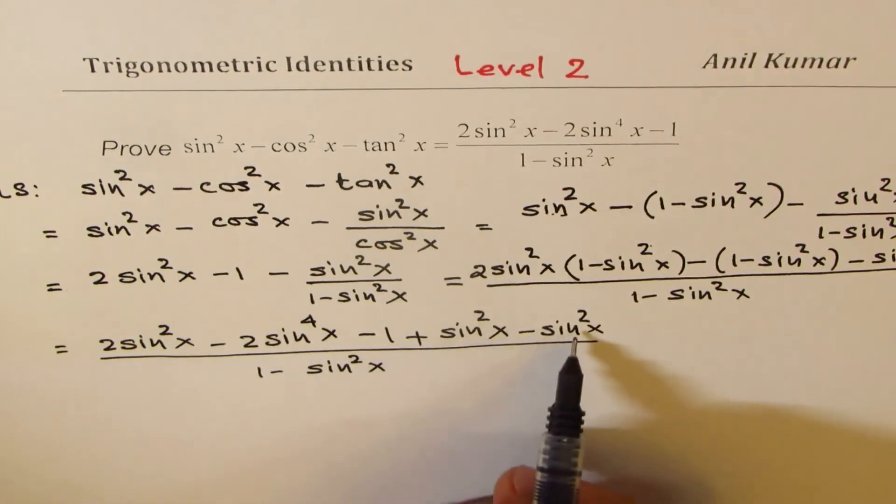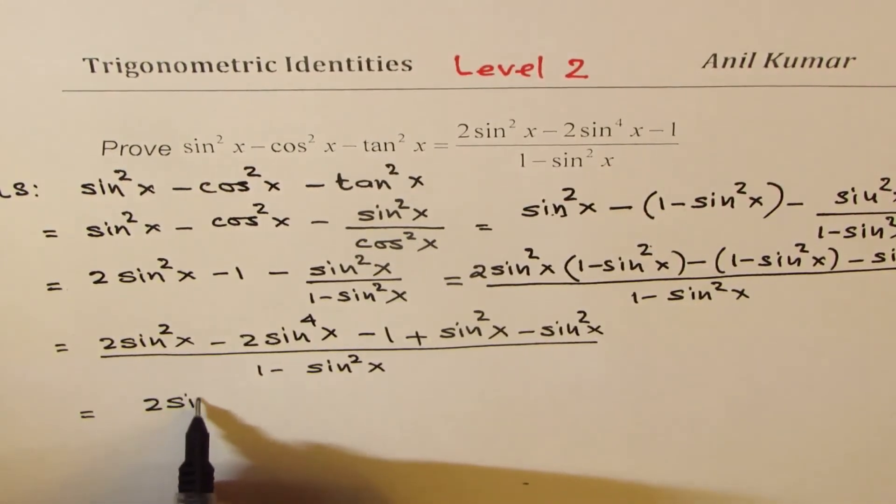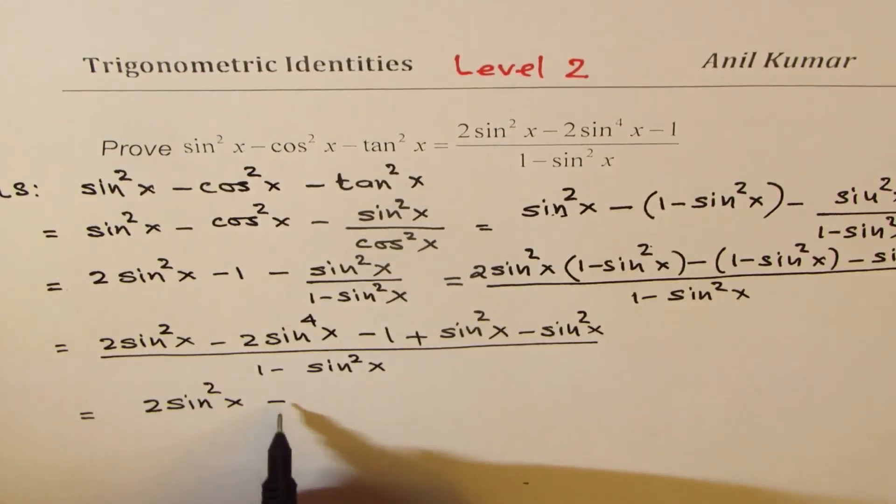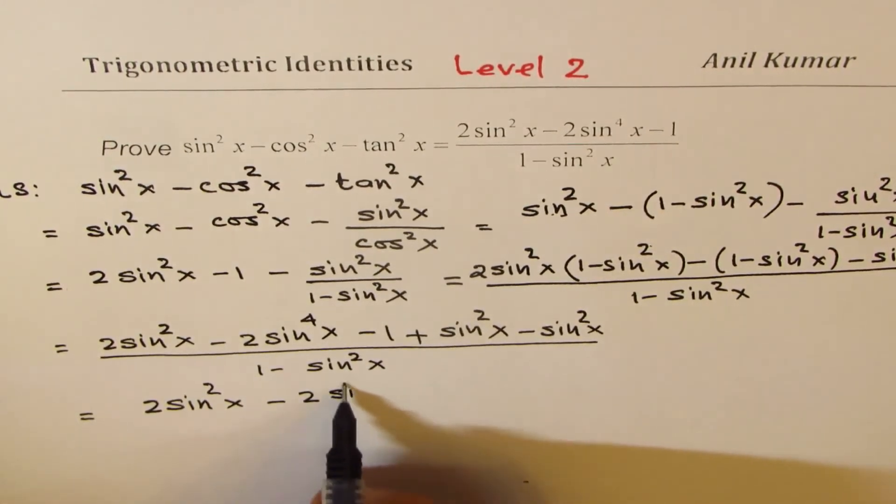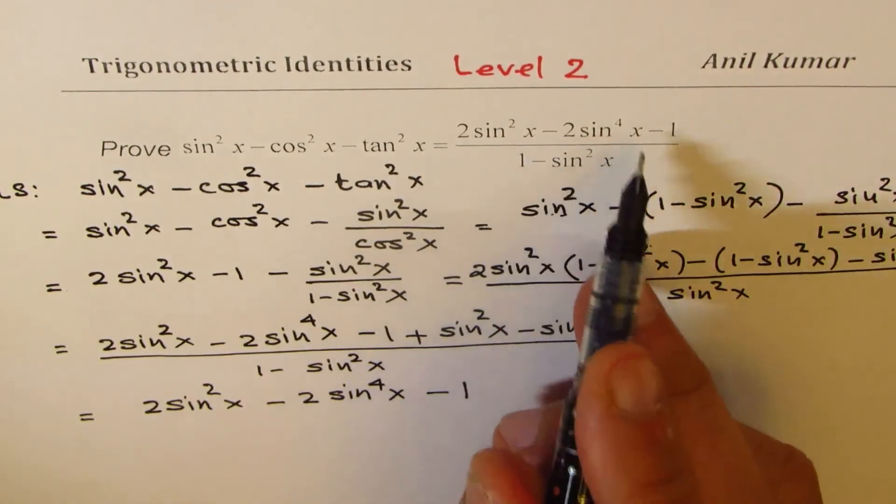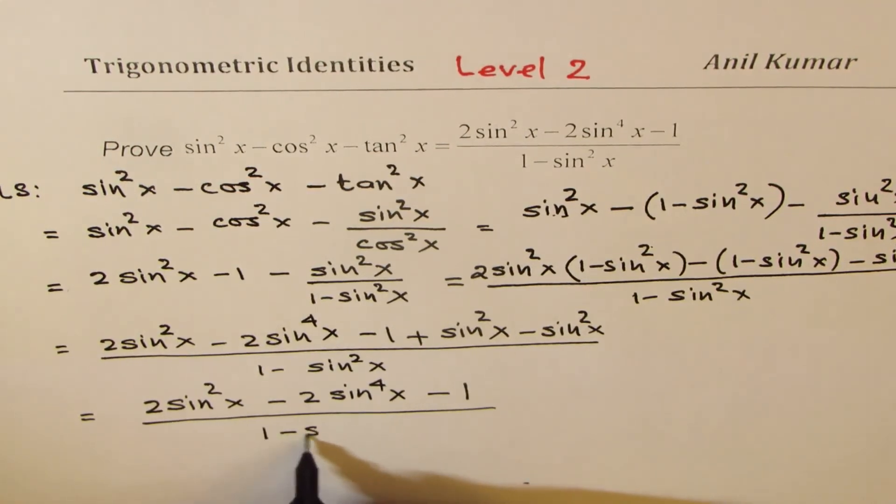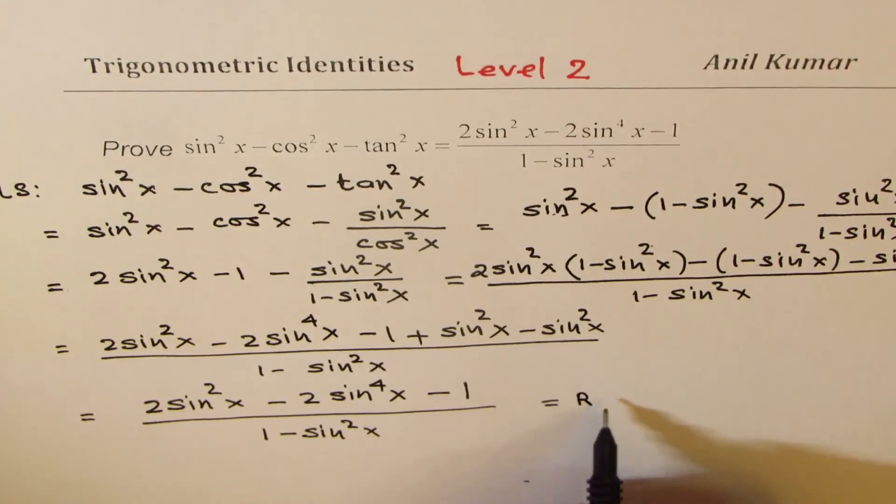Now as you can see, these two terms cancel, and what we get here is 2 sin² x - 2 sin⁴ x - 1, right? So we get the numerator divided by 1 - sin² x, which is the denominator, and this is exactly equal to the right side.